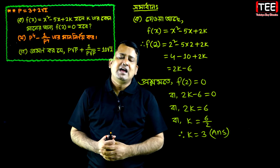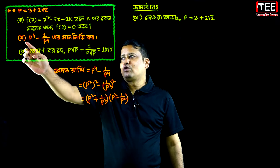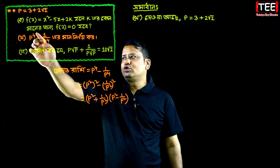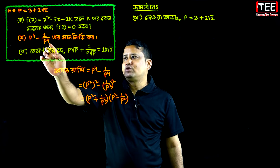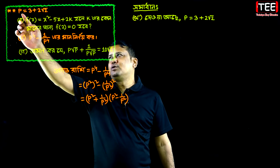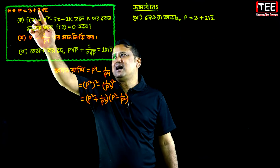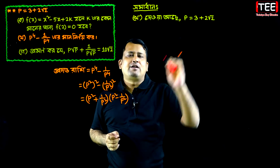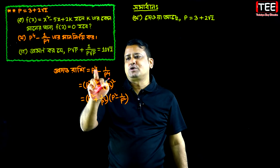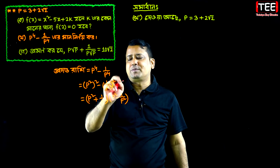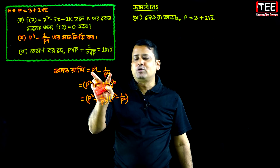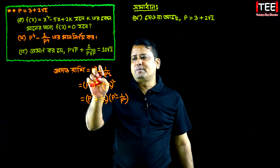Here we have the answer. The answer is p to the power 4 minus 1 by p to the power 4. We put the answer as p to the power 4 minus 1 by p to the power 4.